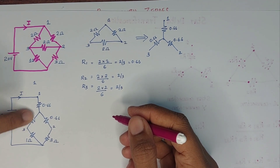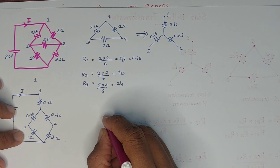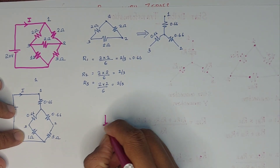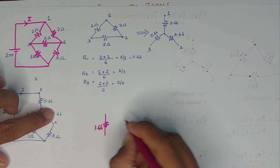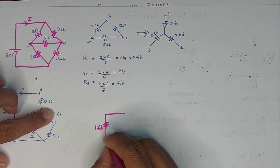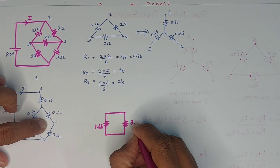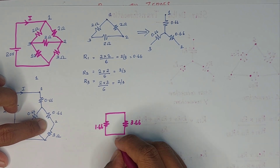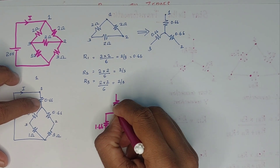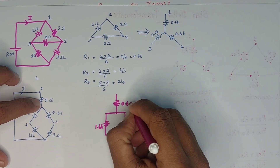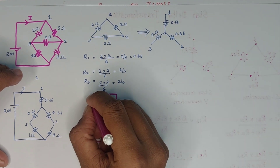This branch is 0.66 plus 1 = 1.66 ohm. The other branch is 0.66 plus 3 = 3.66 ohm. Now we have to further simplify the figure — 1.66 ohm in parallel with 3.66 ohm.